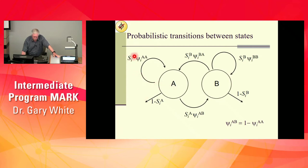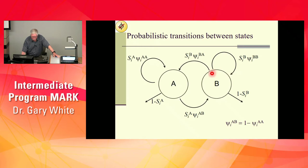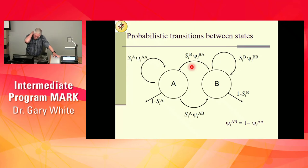Going back to the diagram: if you stay in A, you go through survival rate S-A and need psi-AA to stay, or you can survive with S-A and go to B. Over in B, you can stay with S-B and psi-BB, or survive with S-B and go to A. The key point is that transitions occur after survival — you survive first, then transition at the end of the interval.